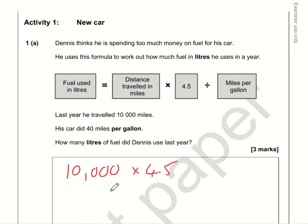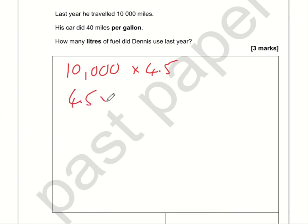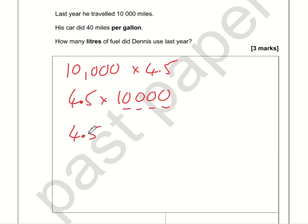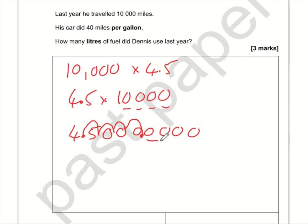It's easier to turn it around: 4.5 times 10,000. Because this is a multiple of 10, we can just move the decimal point. There are four zeros, so we move the decimal point four positions to the right, making the number bigger. Adding placeholder zeros: one, two, three, four — it lands at 45,000. So 4.5 times 10,000 is 45,000.